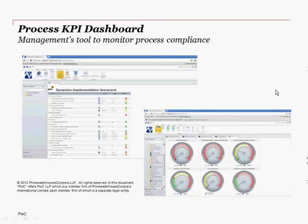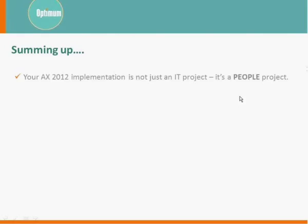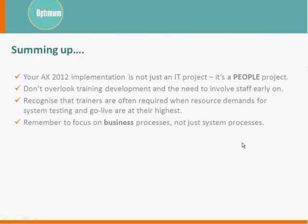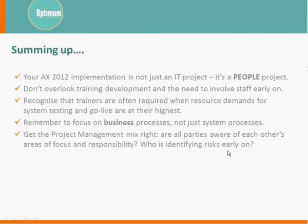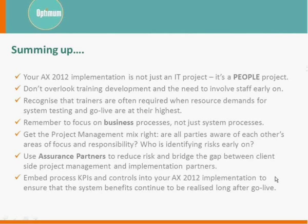To briefly sum up: your AX 2012 implementation is not just an IT project — it's a people project. Don't overlook training, development, and the need to involve staff early on. Recognize that trainers are often required when resource demands for system testing and go-live are at their highest. Focus on business processes, not just system processes. Get the project management mix right and ensure all parties are aware of each other's areas of focus. Use assurance partners to reduce risk and bridge the gap between client-side project management and implementation partners. Embed process KPIs and controls to ensure benefits continue to be realized long after go-live.